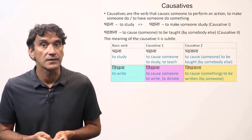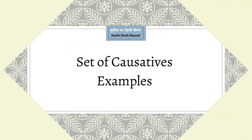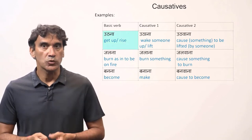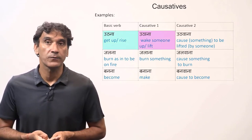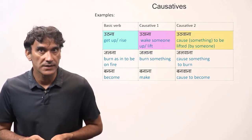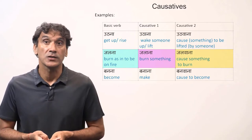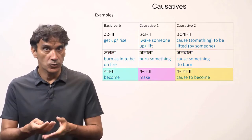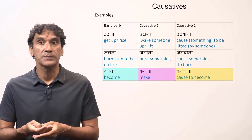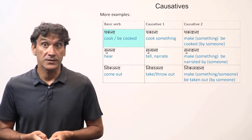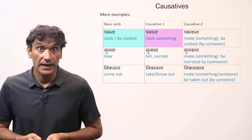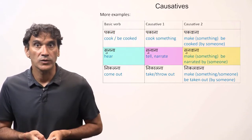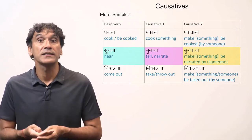Let's take some sets of causatives. Utna: to get up, to rise. Uthana: to wake someone up, to lift. Uthwana: to cause something to be lifted by someone. Jalna: to burn, as in to be on fire. Jalana: to burn something. Jalwana: to cause something to be burned. Banna: to become. Banana: to make. Banwana: to cause something to become. Pakna: to cook, as in to be cooked. Pakana: to cook something. Pakwana: to make something be cooked by someone. Sunna: to hear. Sunana: to tell, to narrate. Sunwana: to make something be narrated by someone.